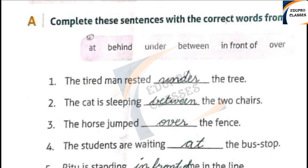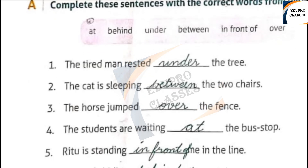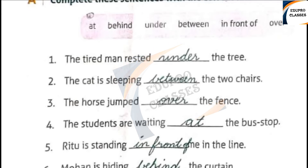Complete these sentences with the correct words from the box. The prepositions given are: behind, under, between, in front of, and over. Example sentences: 1. The tired man rested under the tree. 2. The kid is sleeping between the two chairs. 3. The horse jumped over the fence. 4. The students are waiting at the bus stop. 5. Ritu is standing in front of me in the line. 6. Mohan is hiding behind the curtain.